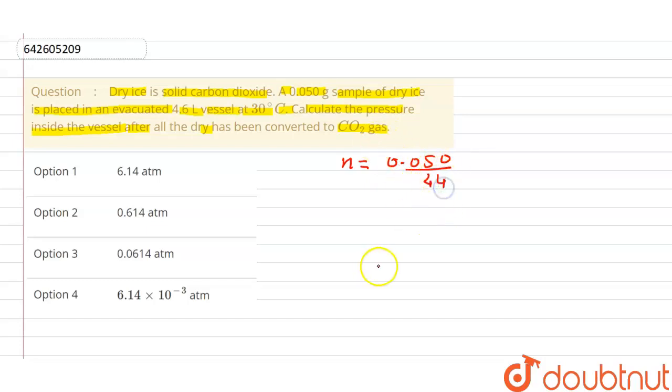We have to find the pressure at this temperature, so we can convert the temperature into Kelvin from Celsius by adding 273. So this will be equals to 303 Kelvin. We have to find the pressure using PV equals nRT.